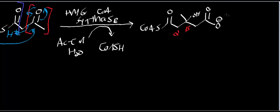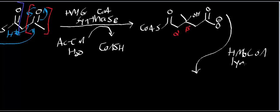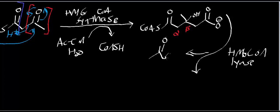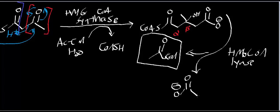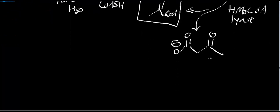We generate HMG-CoA, and the next enzyme is HMG-CoA lyase — hydroxymethylglutaryl-CoA lyase. What this enzyme does is kick off acetyl-CoA, and we end up generating acetoacetate. That released acetyl-CoA gets consumed by citrate synthase, combining with oxaloacetate to produce citrate. The lyase ends up producing acetoacetate.